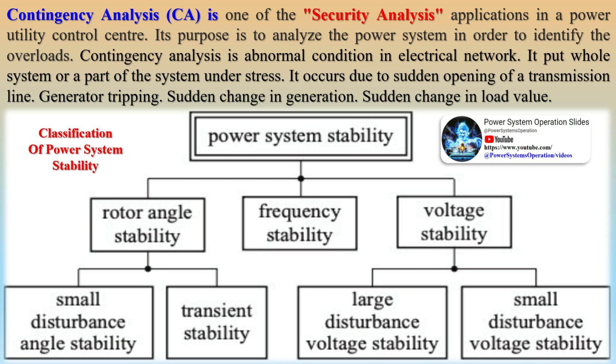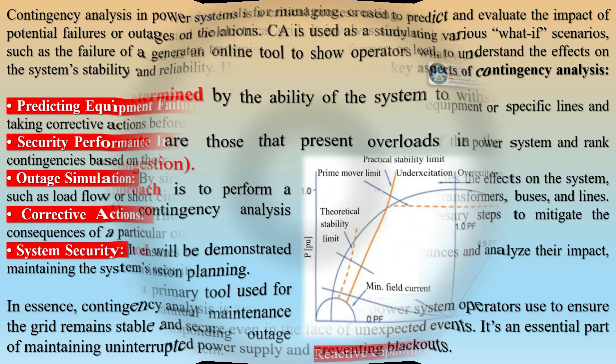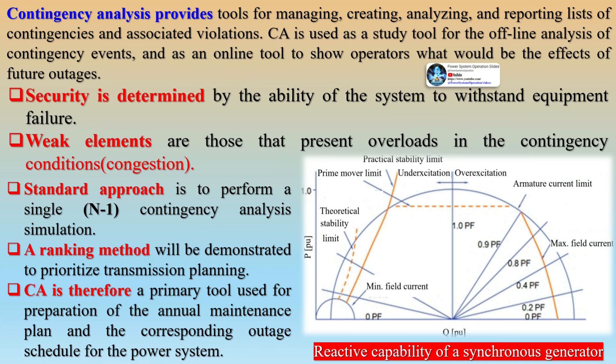The contingency ranking approach is used to identify these cases and rate them according to their severity. Maintaining power system security is one of the challenging tasks for power system engineers. The security assessment is an essential task as it gives knowledge about the system state in the event of a contingency. The contingency analysis technique is widely used to predict the effect of outages like failures of equipment and transmission lines, and to take necessary actions to keep the power system secure and reliable.